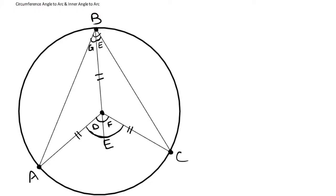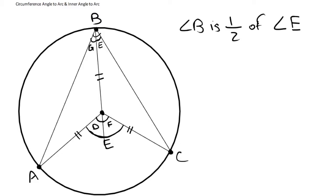Welcome back to another M&S tutoring video. In this video we're going to be learning about the relationship between the circumference angle to the arc and the inner angle to the arc. When looking at almost all sectors and circumference angles, we notice that angle B is always one half of angle E. Over here you can see there's a sector being formed between E, A, and C — that's the regular sector — and there's also a circumference angle to a sector being formed, which is B, A, and C. Every time we look, we notice that angle B is always one half of angle E.